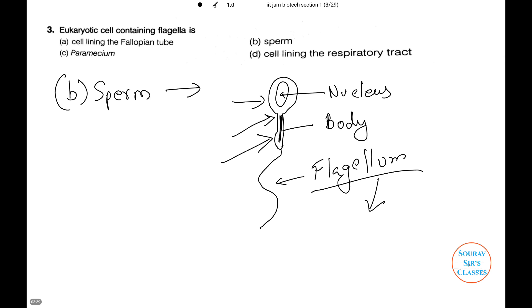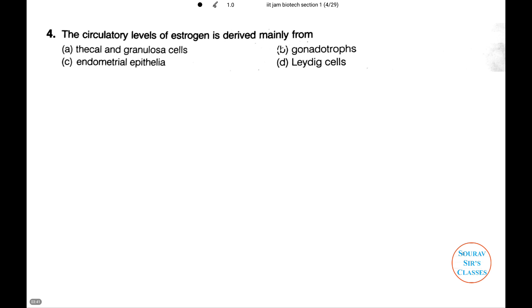Moving on to another question. The circulatory levels of estrogen are derived mainly from among four options. Leydig cells are found in male reproductive system, thus number D is not an option. The gonadotrophs are responsible for release of other hormones. Endometrial epithelium is certainly not the answer.